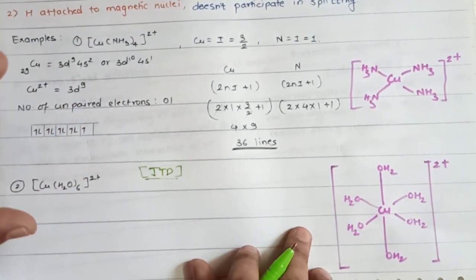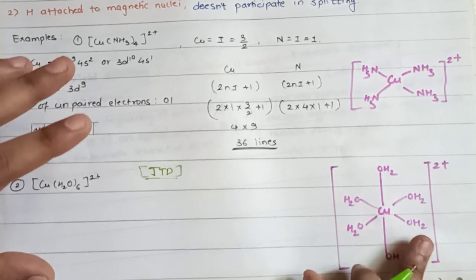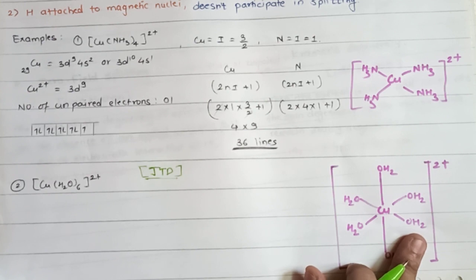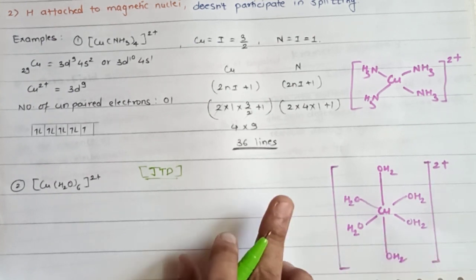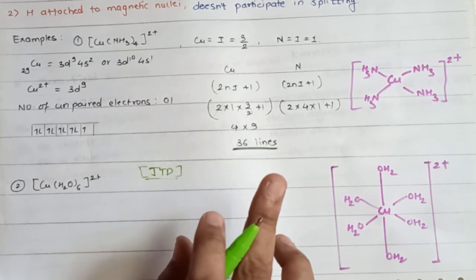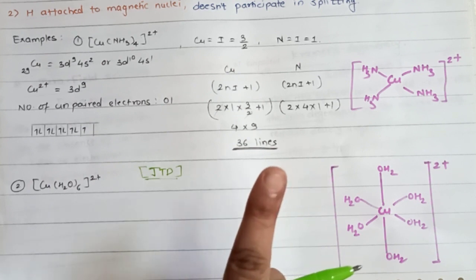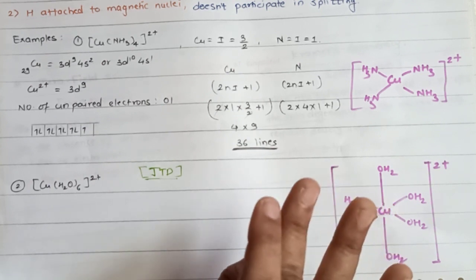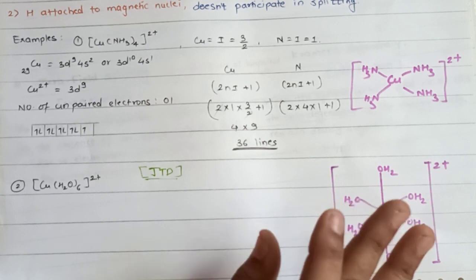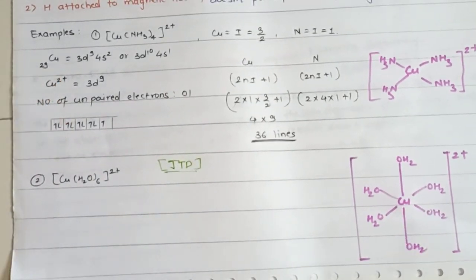By using Jahn-Teller distortion we reduce the complex's symmetry and energy. This distortion is generally observed in transition metal complexes with electronic configurations D1, D2, and low spin complexes of D4, D5, D7, and D9. Now let's solve this example.